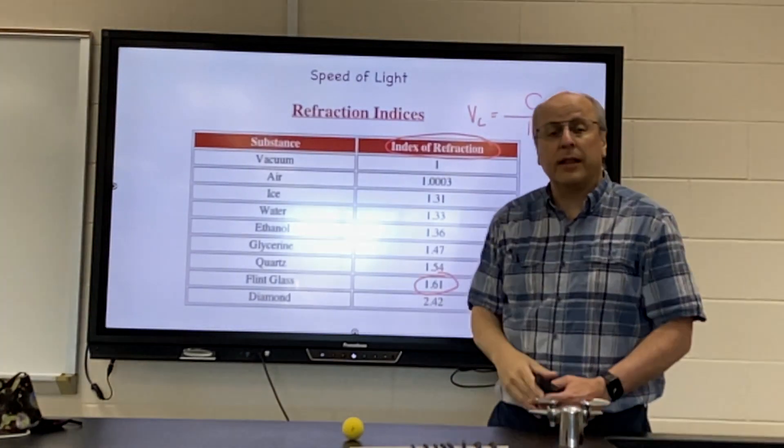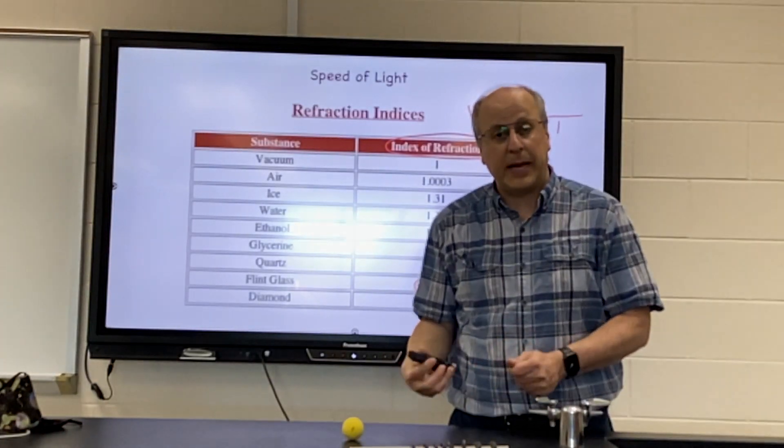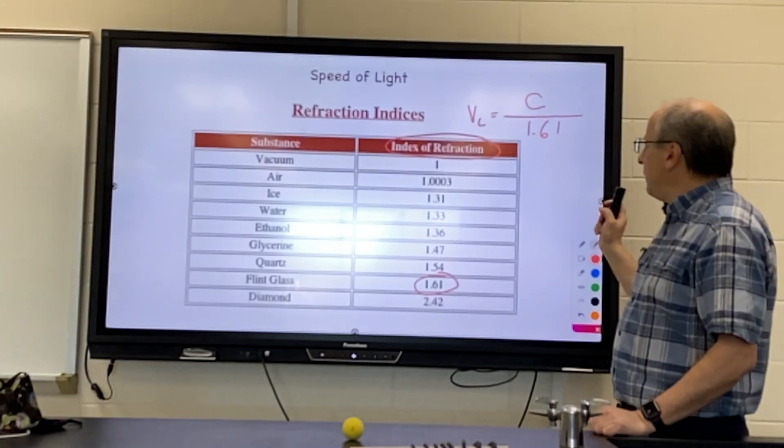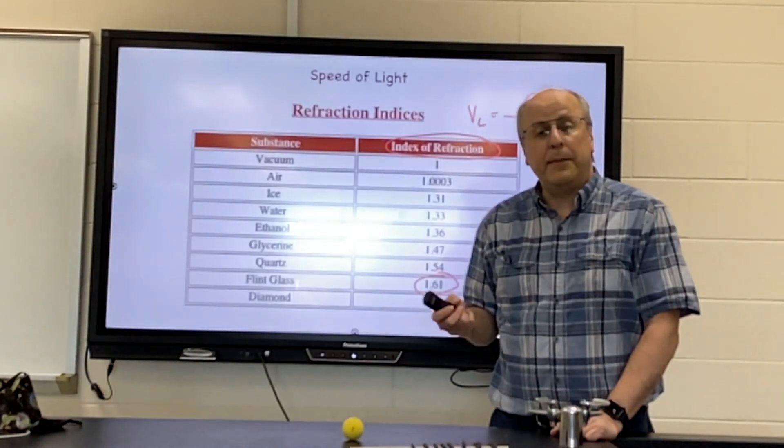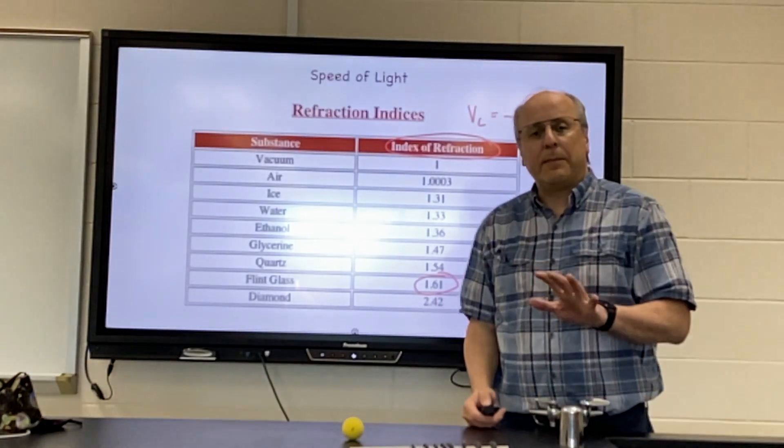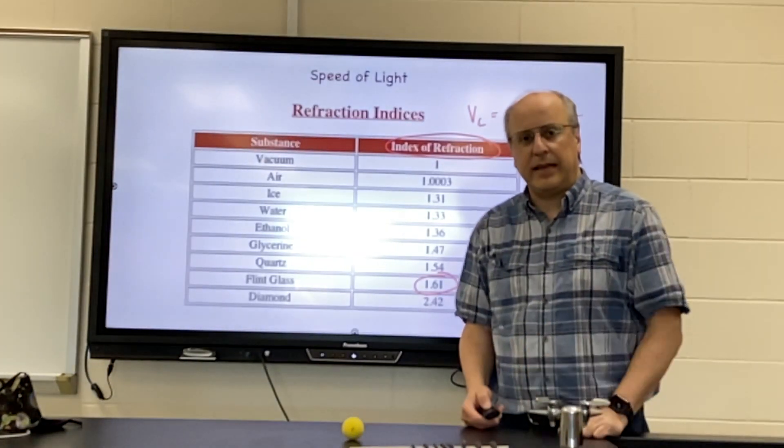It will become more important later in the year when we look at what refraction actually talks about. Okay, so index of refraction will let you figure out the speed of light when the light is traveling through a material different from outer space. Remember, light always slows down when it goes from outer space into anything else.